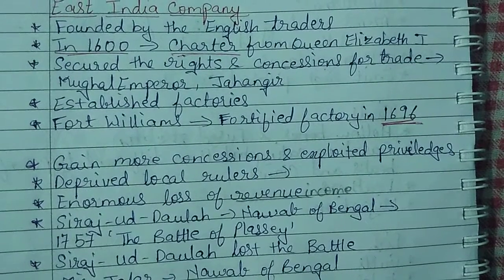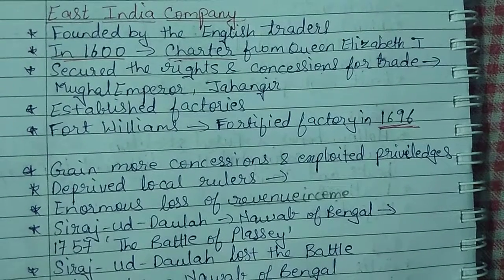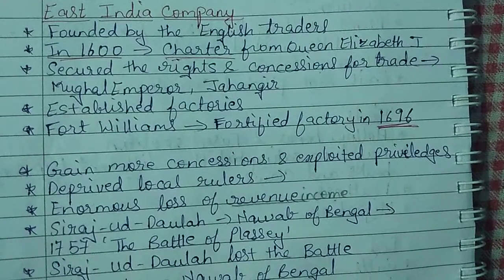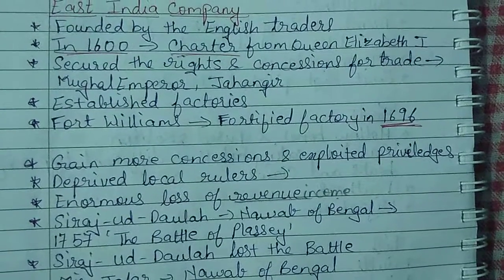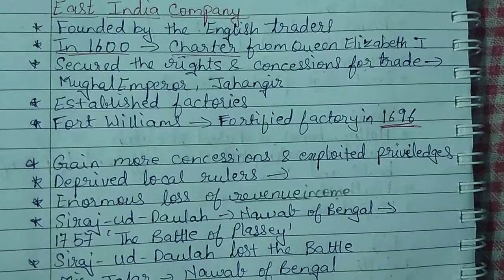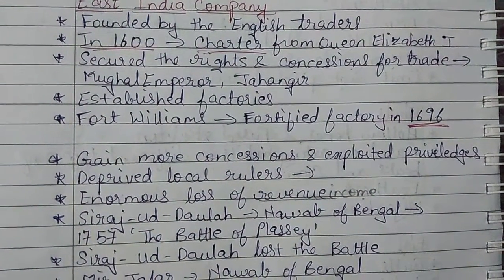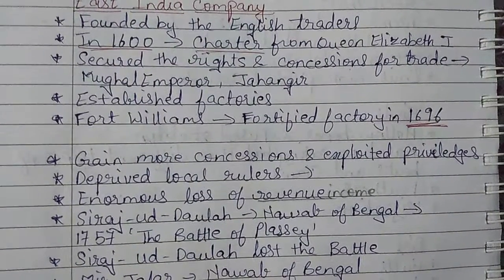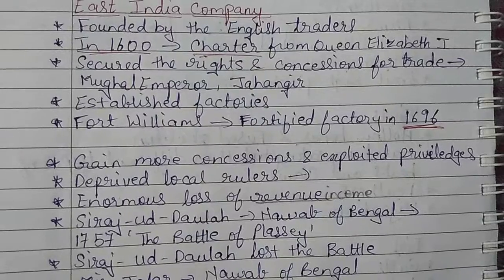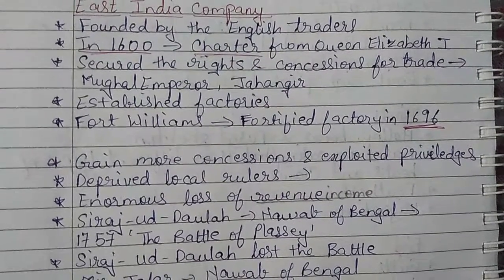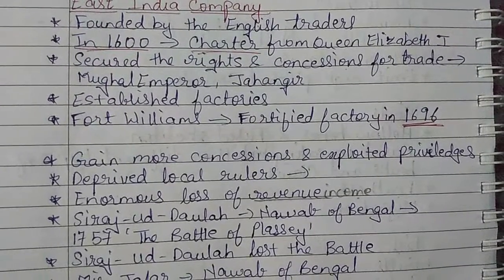After the company was formed, they continuously tried to gain more concessions and more rights. They started to exploit the privileges — that is, whatever benefits they received, they took full advantage of all the rights that were given to them, on the name of trading.